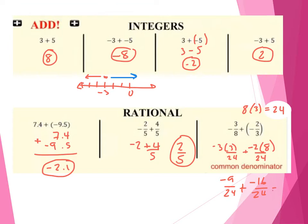So negative 9 plus negative 16 — that's going to make us more negative. That's going to give us negative 25 over 24. Last thing we want to check is can we simplify that. In this case, no. We could write it as a mixed number, but I'm okay with just leaving it as an improper fraction for now. So this is just a quick run-through on how to add numbers, looking primarily at positives and negatives and also how we work with fractions.